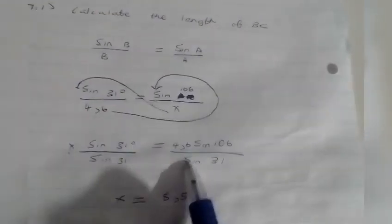Sine 31 over 4.6 equals sine 106 over x. From there you swap, you take the value to side x, both the sides. So it's x sine 31 degrees equals 4.6 sine 106.